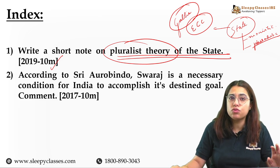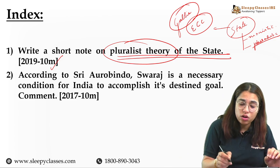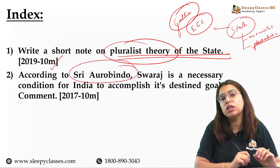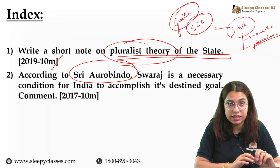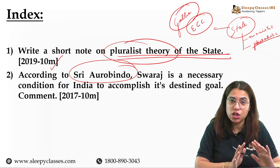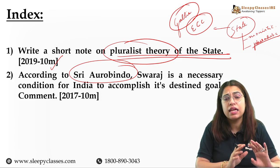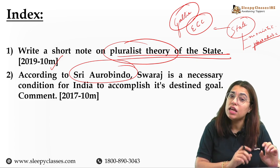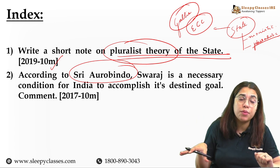The next question, from 2017, is regarding Indian political thought and deals with Sri Aurobindo's very important and very spiritual concept of Swaraj. We will talk about what kind of spiritual concepts are involved, how they can be broken down and incorporated with relevant examples and interlinkages in your answer.